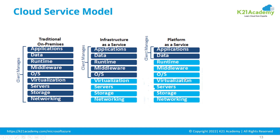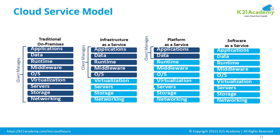The third model is Software as a Service, in which everything is managed by the cloud vendor. You as a customer only have an account and you use that service. You don't need to worry about the underlying operating system, high availability, or disaster recovery — it's all done and managed by your cloud vendor. So those are the three models: Infrastructure as a Service, Platform as a Service, and Software as a Service.